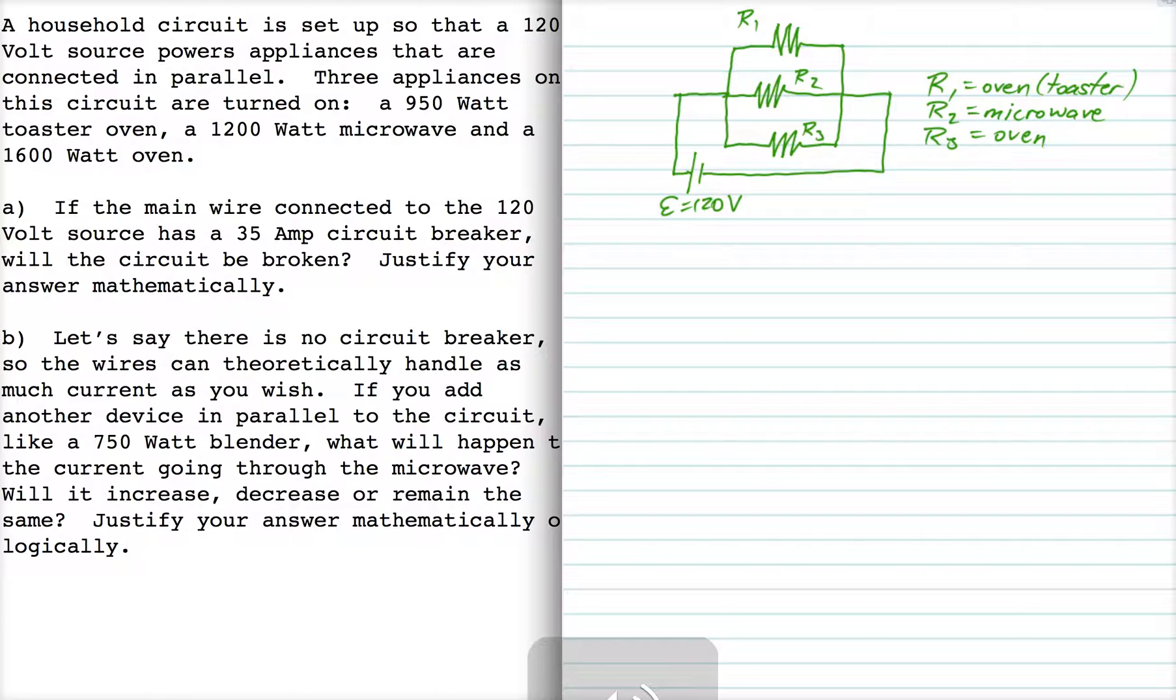All right, so what we need to do first is we need to figure out if a 35 amp circuit breaker in this line is sufficient. So we need to find out what this current is going into this junction. To do that, we need to find the three currents coming out of that junction. We need to find I1, I2, and I3.